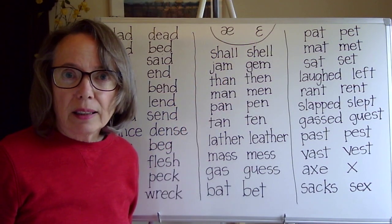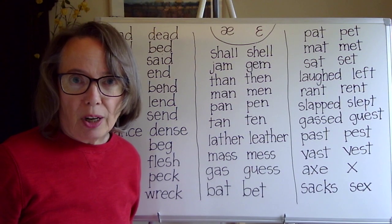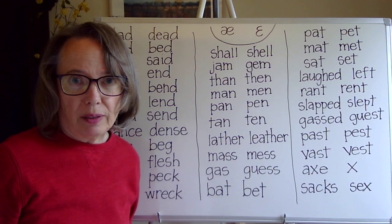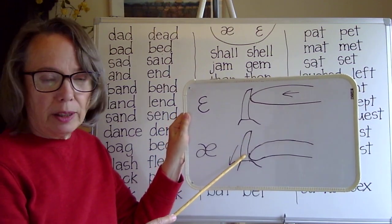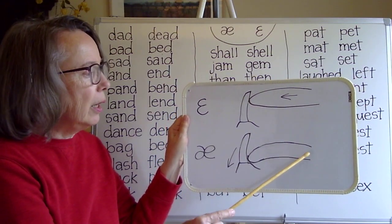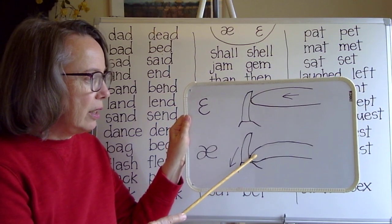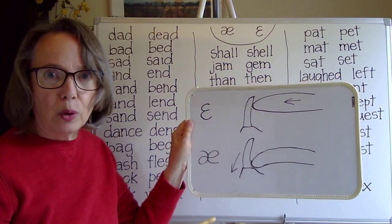Ah is in the lowest front tongue position. So here I have your bottom tooth and ah, the tongue is down touching the tooth in the lower part.